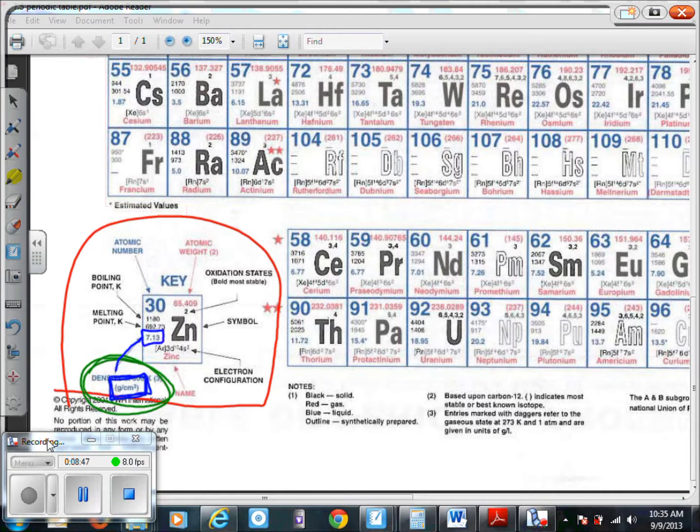It shows that it's pointing to this number right here. So zinc has a density of 7.13 grams per cubic centimeter. If I asked you about the density for cesium, we look for the number and here it is: 1.87 grams per cubic centimeter.